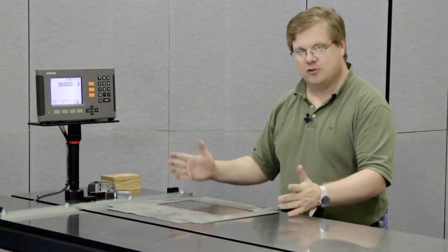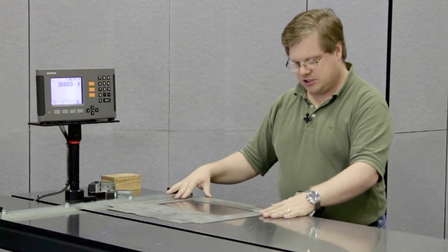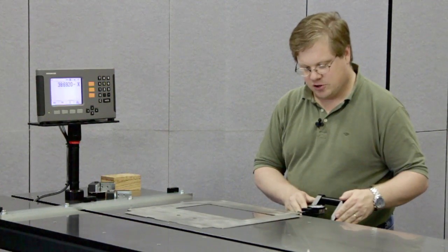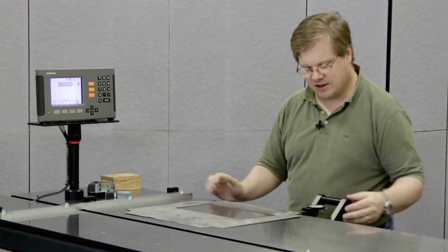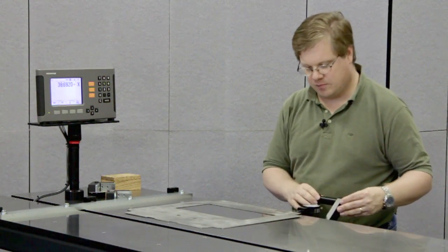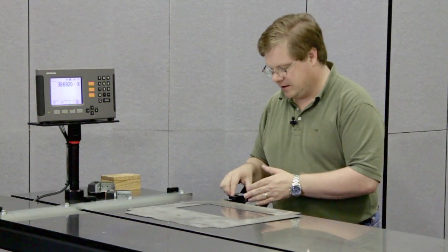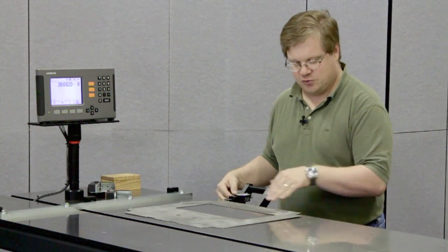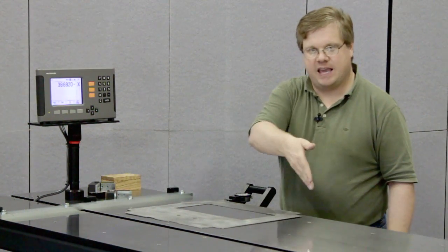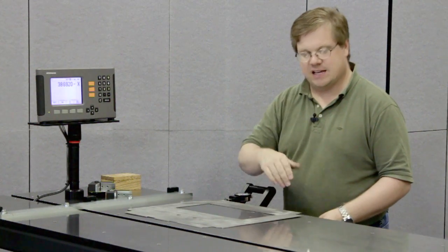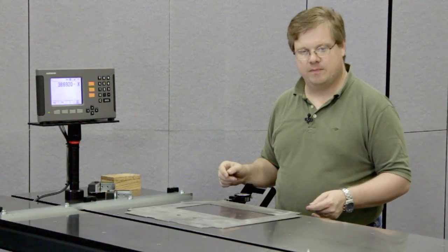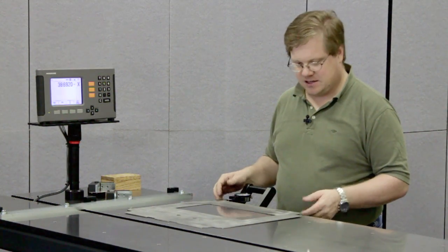Another thing you can do is instead of working from the edge and just going from a zero point, you can bring the indicator down to one end, set it at zero, bring it to the other end, set it to zero, and by adjusting the part, then as you run down the edge, you're going to see camber. So you can see if the edge has any kind of camber to it and it's out of straight, not necessarily out of square. So that's the basic squareness gauge that you can also check camber with.